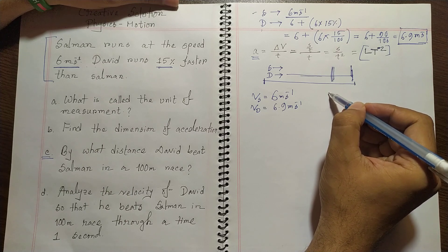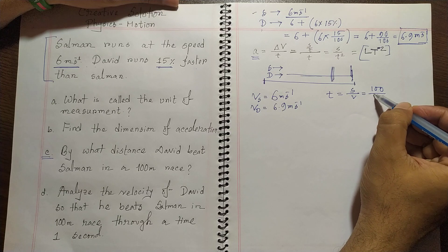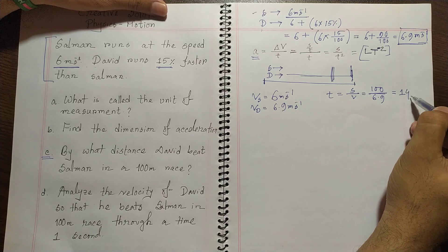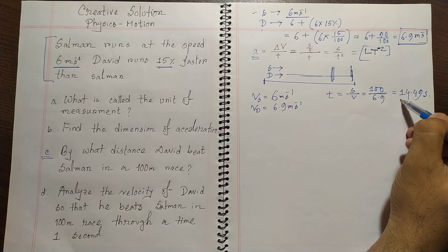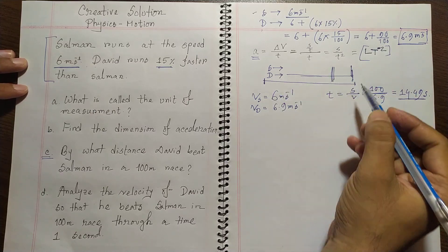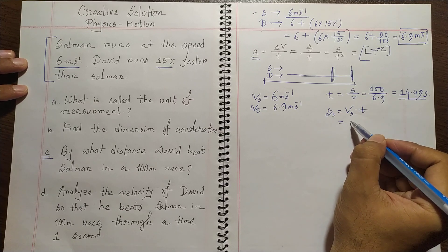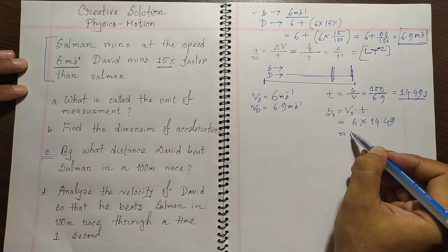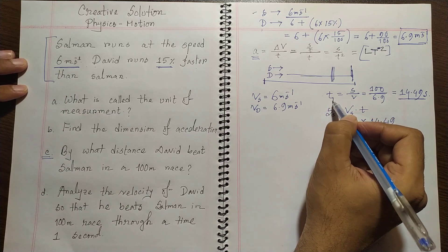We know that time equals displacement over velocity. For David, that is 100 meters divided by 6.9 m/s, which equals 14.49 seconds. Now we need to find how far Salman has traveled in this same time. The distance of Salman equals velocity of Salman times time, which is 6 times 14.49 seconds, giving 86.94 meters.